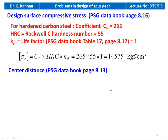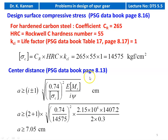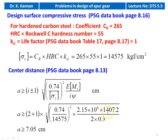Now we calculate the center distance. The equation is available on page 8.13: A ≥ (i ± 1) × ∛[0.74 / σc² × E × [MT] / (i × ψ)]. Substituting all numerical values for external gearing: (2 + 1) × ∛[0.74 / 14,575² × 2.15×10⁶ × 1,407.2 / (2 × 0.3)], giving A ≥ 7.05 cm.